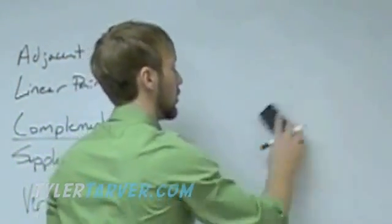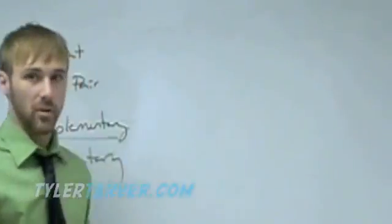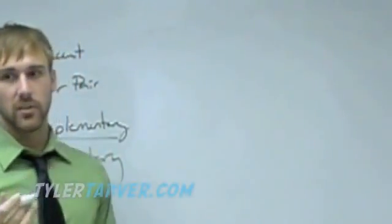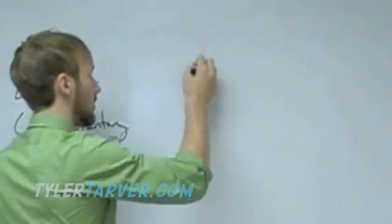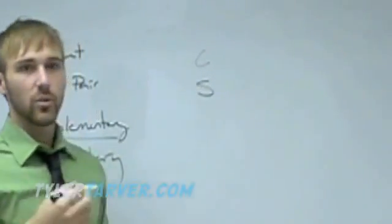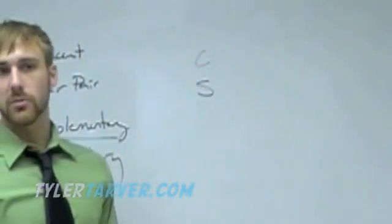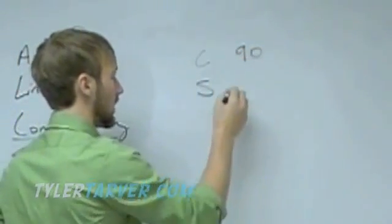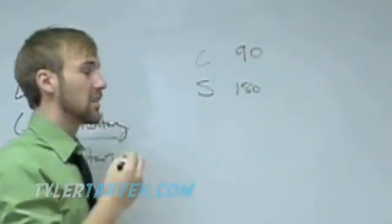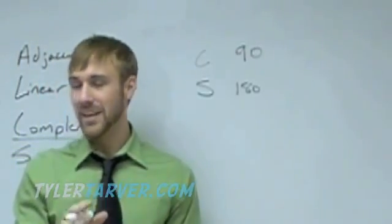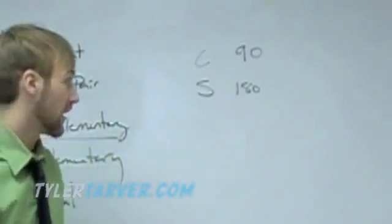Now, real quick, I'm going to show you the way that people remember supplementary and complementary. Alphabetically, which one comes first? Complementary. Which one comes second? Supplementary. Counting, which one comes first, 90 or 180? 90, and then 180. Complementary and supplementary. If you don't know that, you need to know it because that is pretty much one of the basic things in geometry right there.